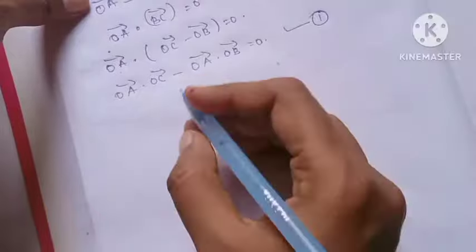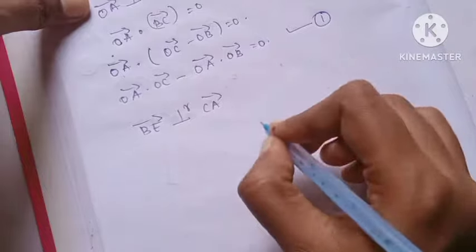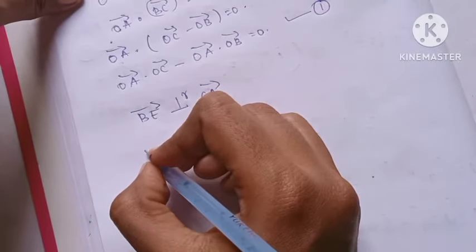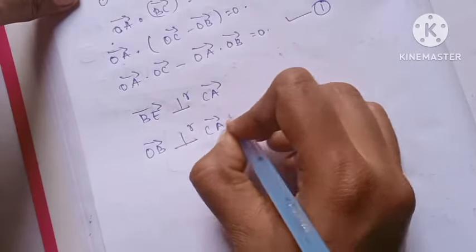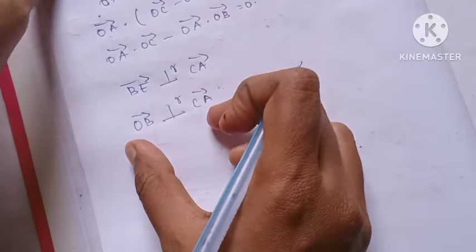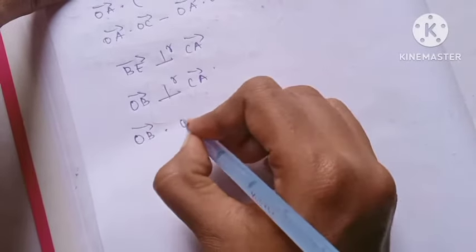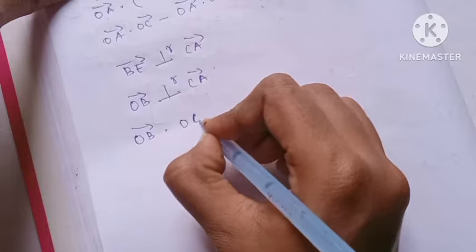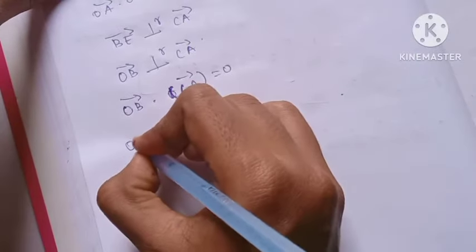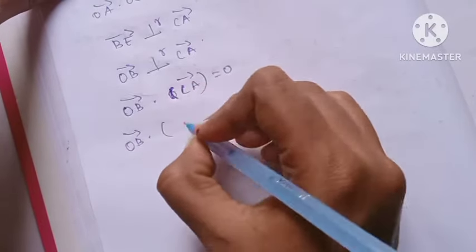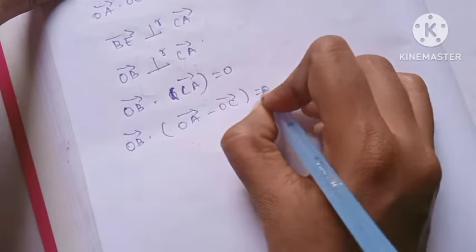BE vector is perpendicular to CA vector. OB vector is perpendicular to CA vector. Then this dot product is zero. OB vector dot CA vector, which is OB vector dot (OA vector minus OC vector) equals zero.